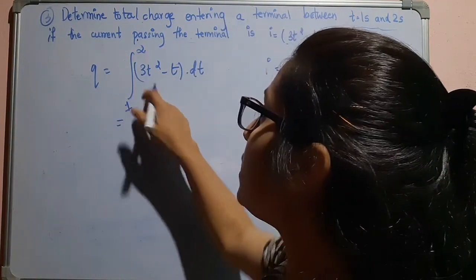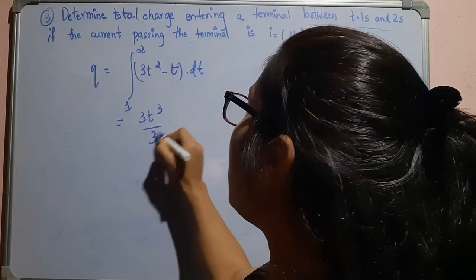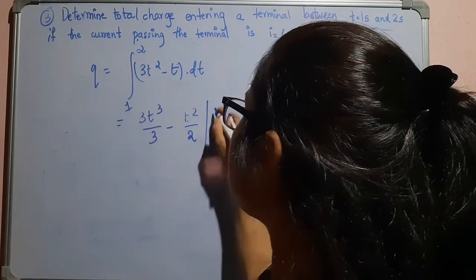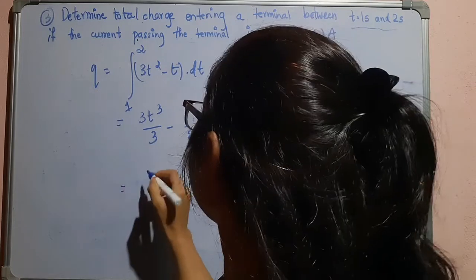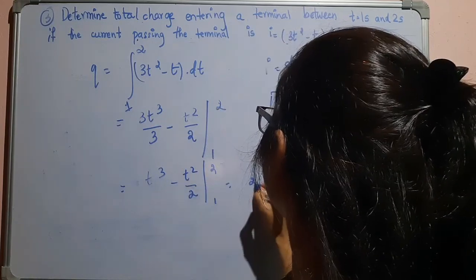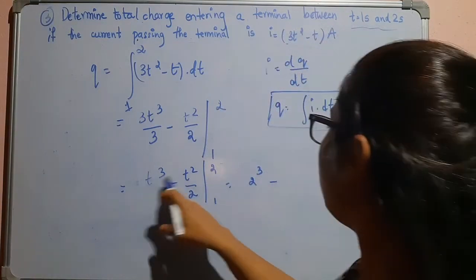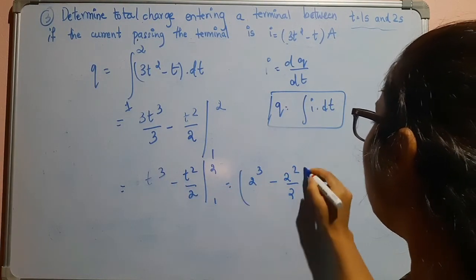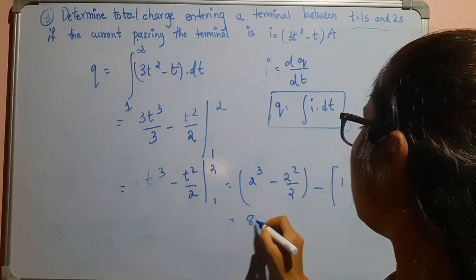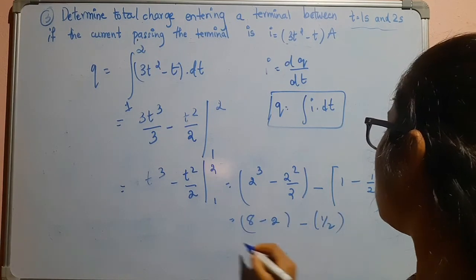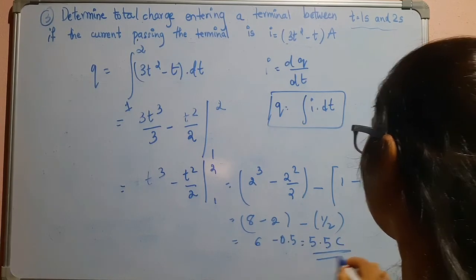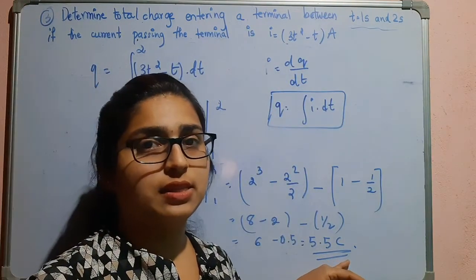Integrating: the first term gives 3t³/3 = t³, and the second term gives t²/2. So q = [t³ − t²/2] evaluated from 1 to 2. That is (2³ − 2²/2) − (1³ − 1²/2) = (8 − 2) − (1 − 0.5) = 6 − 0.5 = 5.5 coulomb. So 5.5 coulomb is the answer to this question.